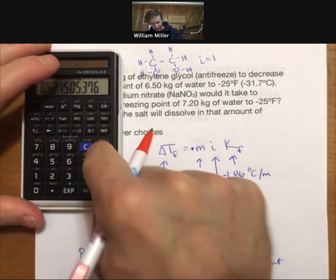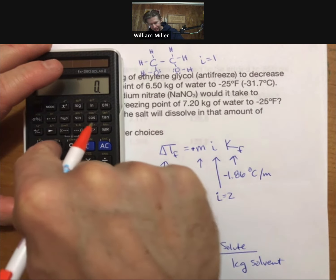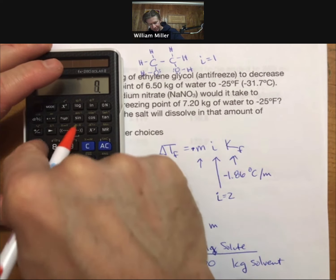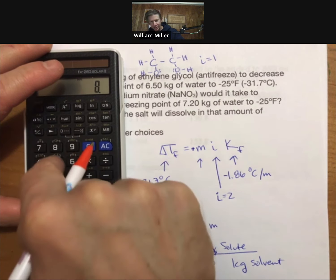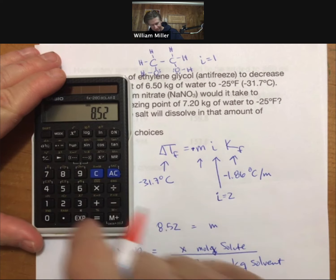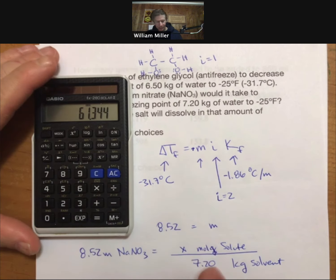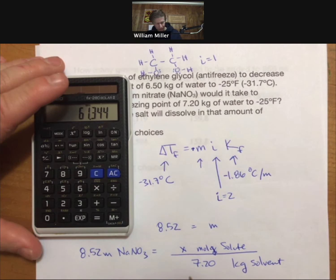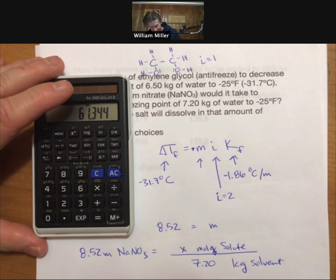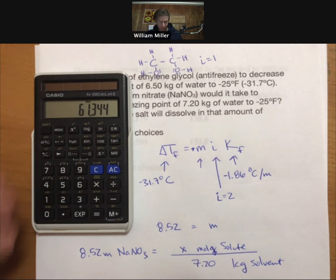That's a lot of moles. 8.52 times 7.2 - we need 61.3 moles of sodium nitrate.